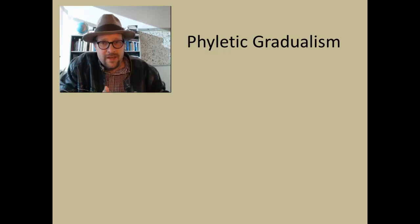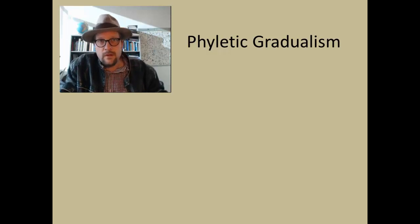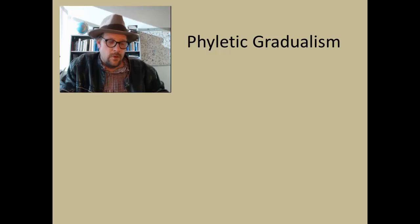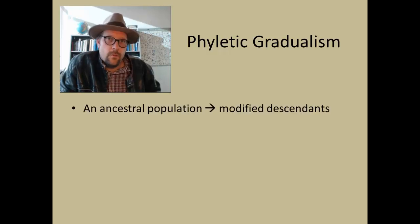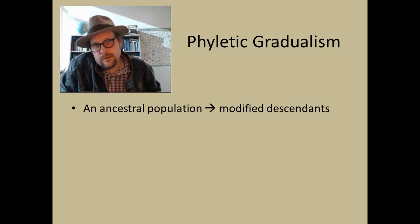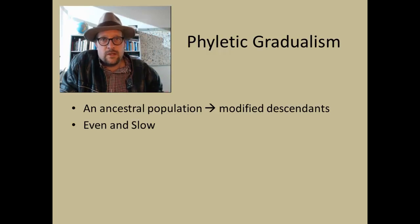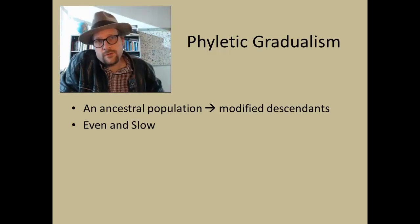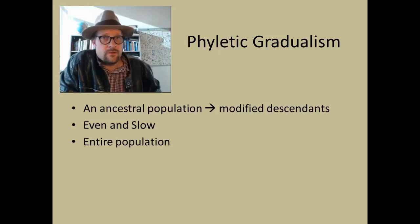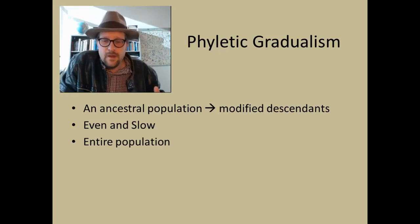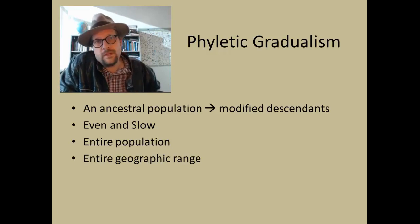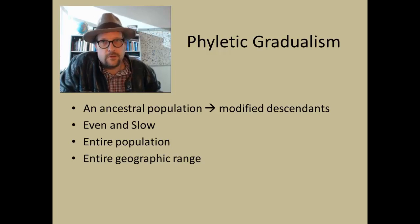In 1977, Gould and Eldridge took on this claim. They stated that the following had to hold true to prove phyletic gradualism occurring in the fossil record: first, new species must arise from the transformation of an ancestral population into its modified descendants; second, this transformation is even and slow; third, the transformation involves the entire population; and fourth, the transformation from one species into another is played out over the entire geographic range of the ancestral species.